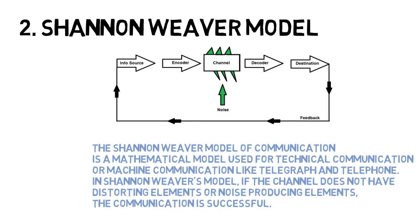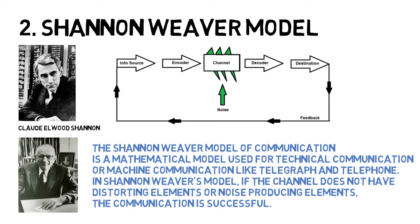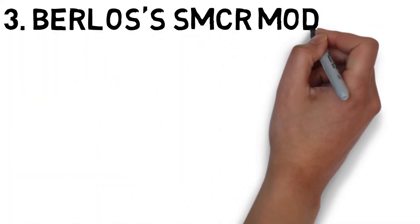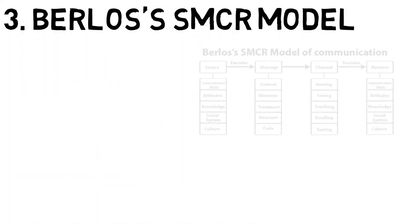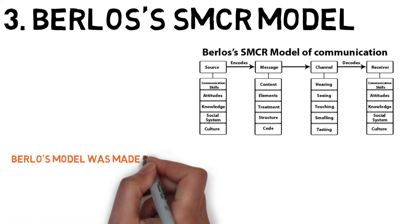The Shannon-Weaver model of communication is a mathematical model used for technical communication or machine communication, like telegraph or telephone. In the Shannon-Weaver model, if the channel does not have distorting elements or noise-producing elements, the communication is successful.